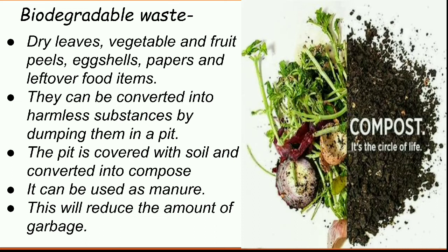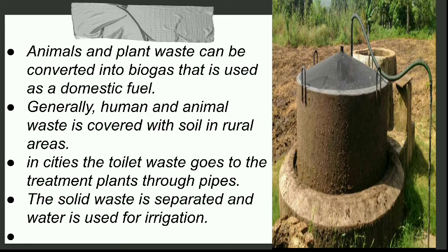If you have a garden, dig a small pit. Put leftover food items, egg shells, vegetable or fruit peels, or dry leaves into that pit. Within 2 weeks, the organic material you have dumped there will be converted into compost. Moreover, animals and plants are converted into biogas, which is used as domestic fuel, and for this, biogas plants are set up in many places.